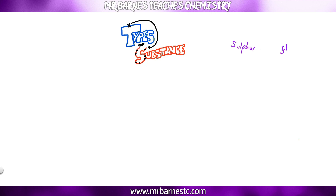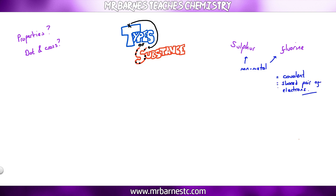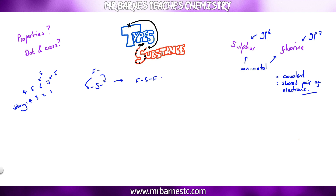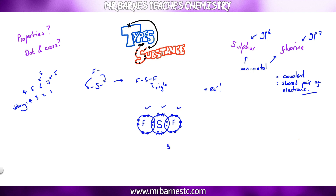For the second example, sulfur and fluorine — both are non-metals, so it must be covalent, with a shared pair of electrons. Sulfur is in group six, fluorine in group seven. Group six needs two electrons, so sulfur can make two bonds; group seven can make one bond. So fluorine joins onto sulfur twice, giving a stick diagram of SF₂. Drawing the dot and cross diagram with overlapping circles, I put a dot and cross in for every single bond, making sure each atom has eight electrons. The formula is SF₂.